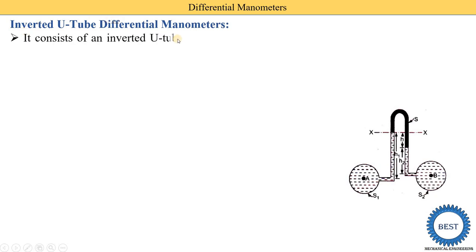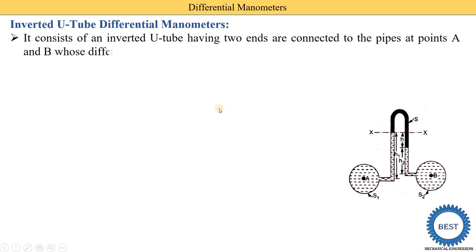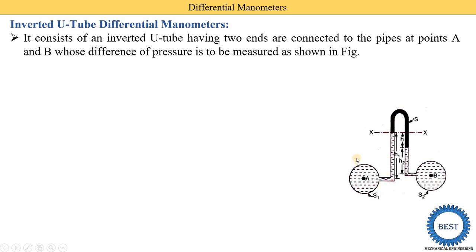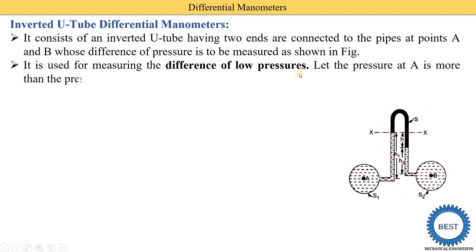The second type is the inverted U-tube differential manometer. A U-tube differential manometer rotated 180 degrees is converted into the inverted U-tube differential manometer. In an inverted U-tube differential manometer, instead of heavy liquid we need to use light liquid, because when it is inverted, heavy liquid would fall into the two pipes. It consists of an inverted U-tube having two ends connected to the pipes at points A and B where the difference of pressure is to be measured. It is used for measuring the difference of low pressure.